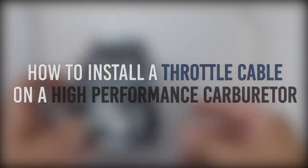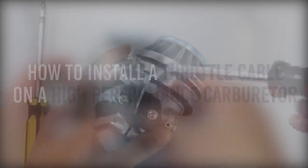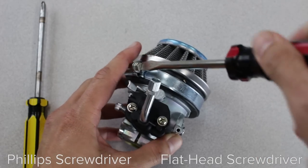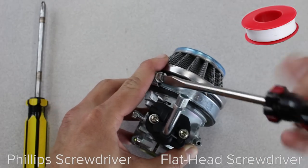In this video we'll be showing you how to install a throttle cable to your high performance carburetor. You'll need a flathead and a phillips screwdriver as well as plumbing tape.